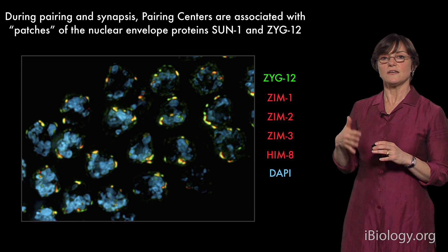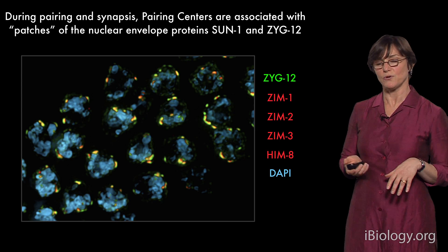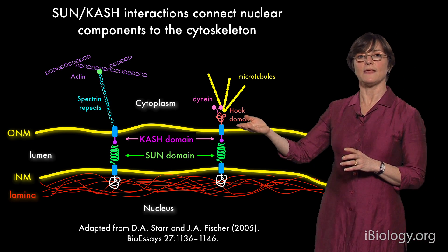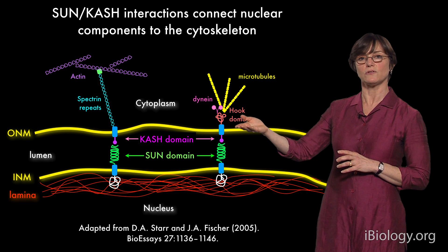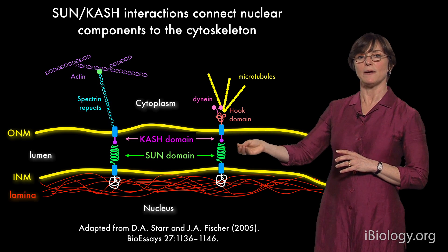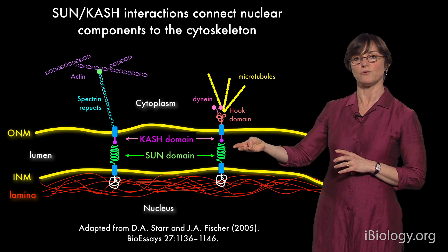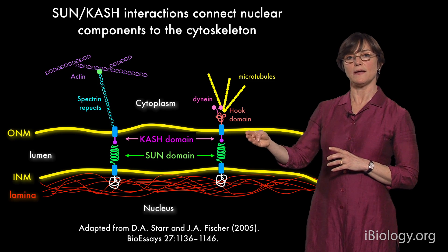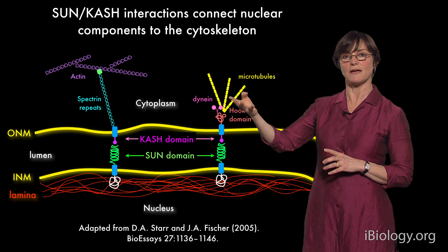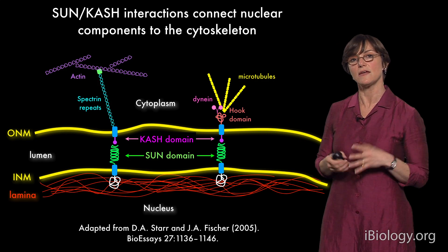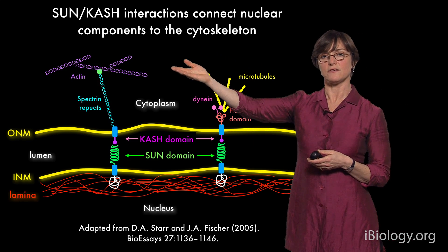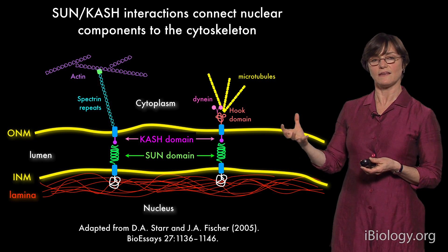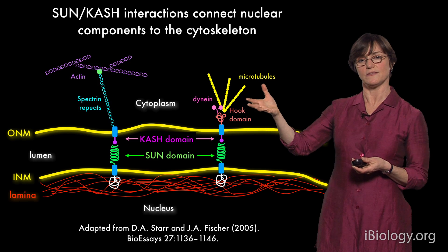ZYG12 turns out to be a KASH domain protein. KASH domain proteins all share the property that they are recruited and retained in the outer nuclear envelope by interaction with something called the SUN domain protein. SUN domain proteins are an anchor in the inner nuclear envelope — they bind to KASH domain proteins, and KASH domain proteins can then interact with different elements in the cytoplasm, such as the actin cytoskeleton or the microtubule cytoskeleton. They structurally connect things inside the nucleus to outside the nucleus.